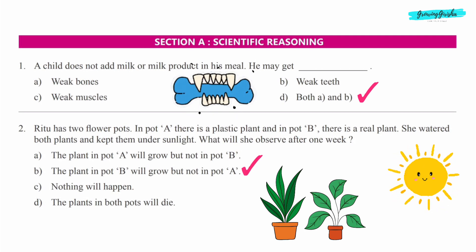Option B: the plant in pot B will grow but not in pot A, because plastic plants cannot grow. It is a non-living thing.